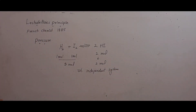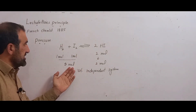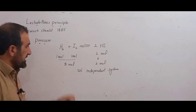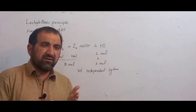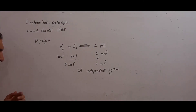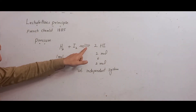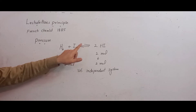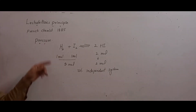This is a volume-independent system. The number of moles of reactants equals the number of moles of products. When the pressure is changed, the volume is also changed and the concentration is also changed, but equally — so the equilibrium will not be disturbed.